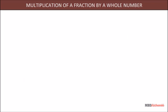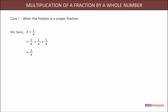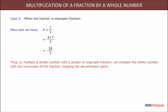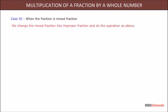Multiplication of a fraction by a whole number. Case 1 — when the fraction is a proper fraction: 3 × 1/4 = 1/4 + 1/4 + 1/4 = 3/4. Similarly, 3/4 × 6 = (3 × 6)/4 = 18/4. Case 2 — when the fraction is an improper fraction: 4 × 7/3 = (4 × 7)/3 = 28/3. Thus, to multiply a whole number with a proper or improper fraction, we multiply the whole number with the numerator, keeping the denominator the same. Case 3 — when the fraction is a mixed fraction, we change it into an improper fraction and proceed as above.